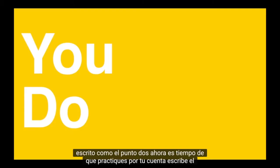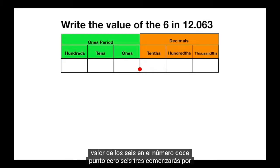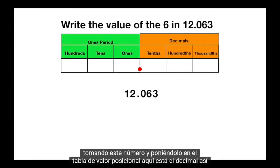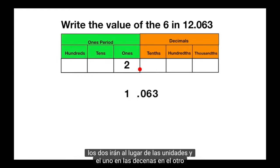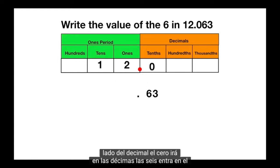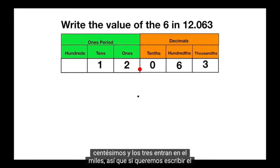Now it's time for you to practice on your own. Write the value of the 6 in the number 12.063. You start by taking this number and putting it on the place value chart. Here's the decimal, so the 2 will go into the ones place, and the 1 into the tens. On the other side of the decimal, the 0 will go into the tenths, the 6 goes into the hundredths, and the 3 goes into the thousandths.